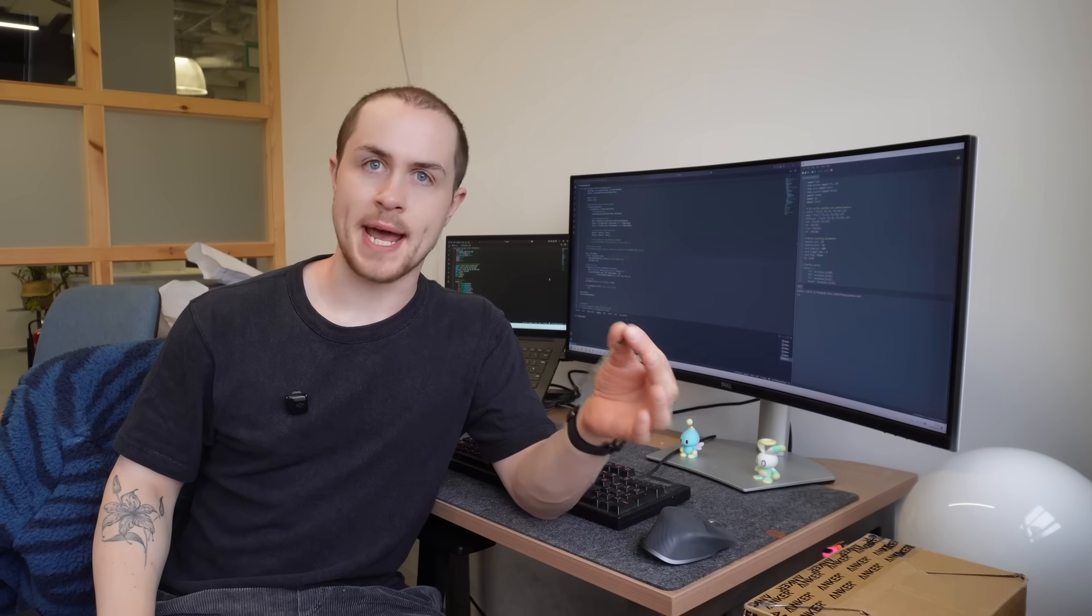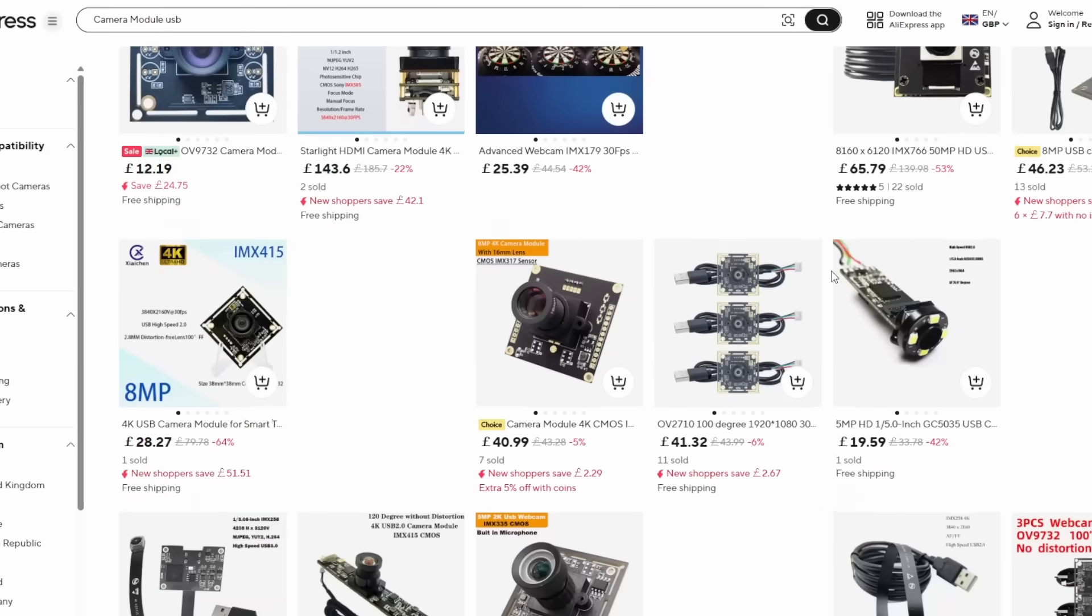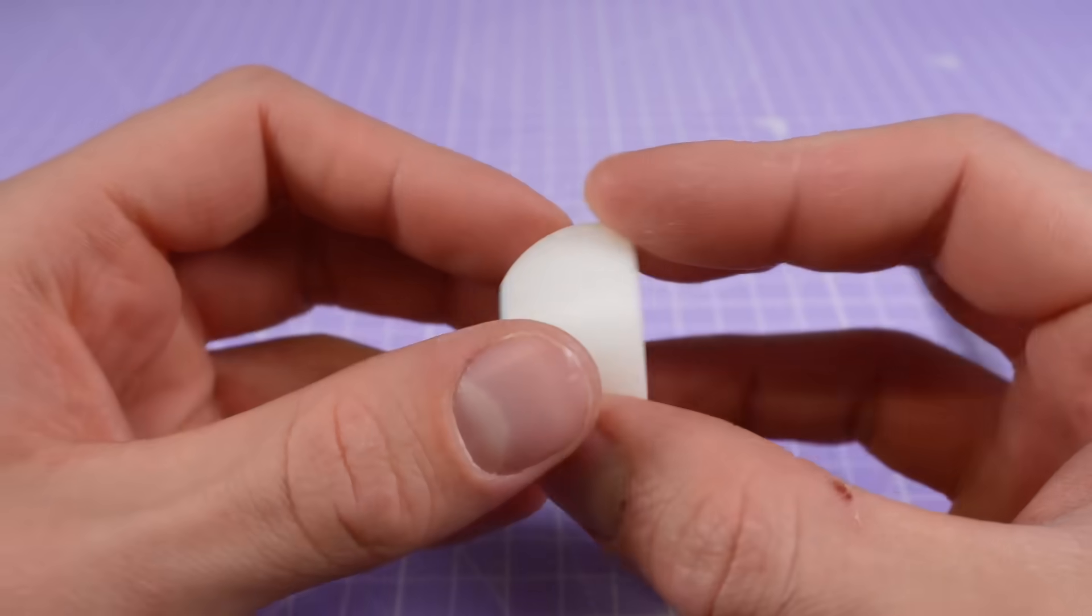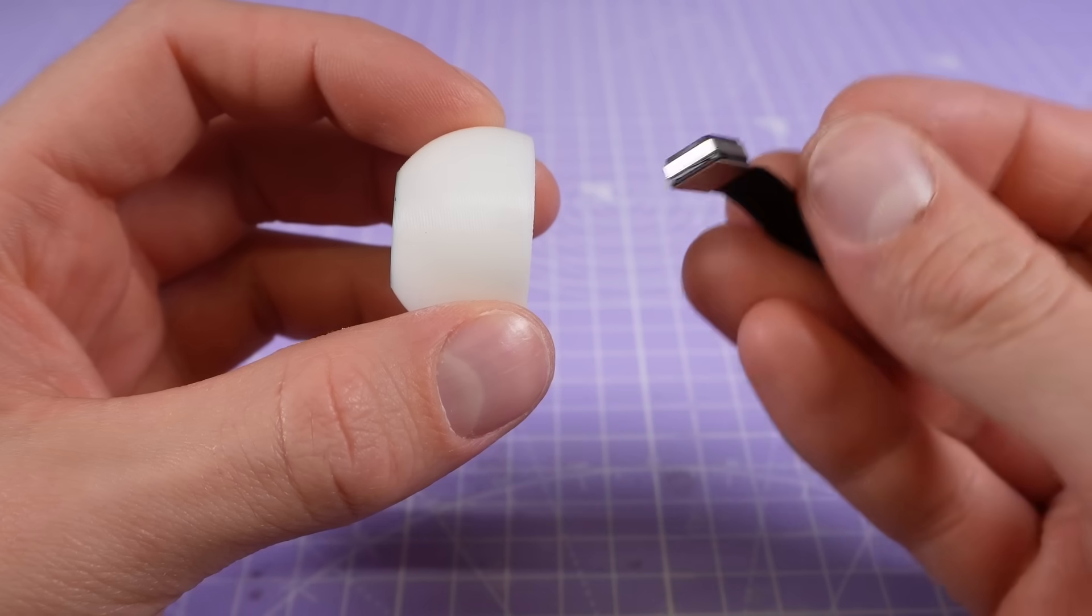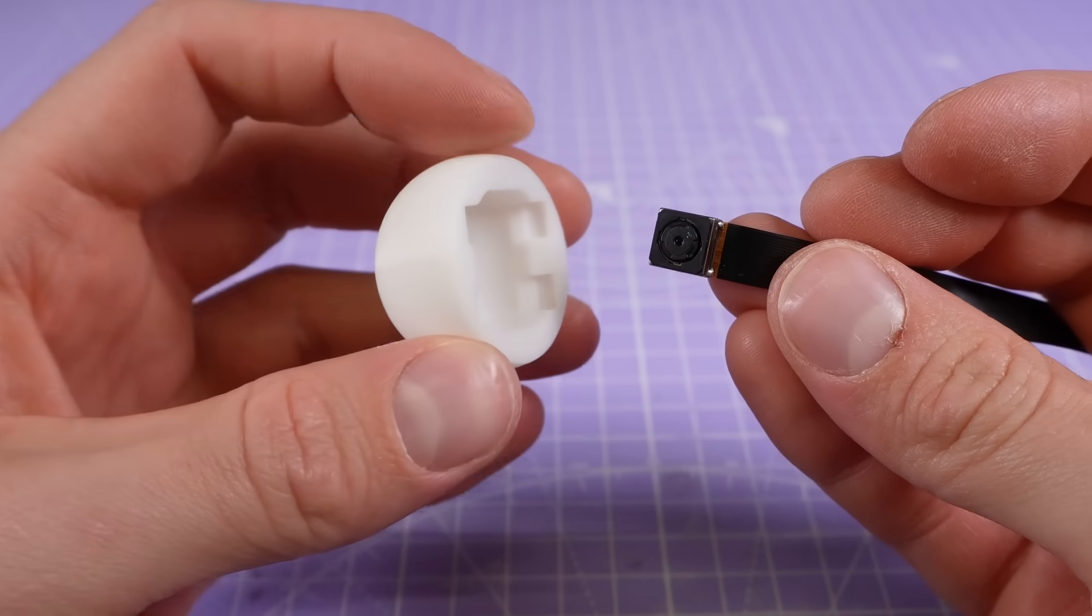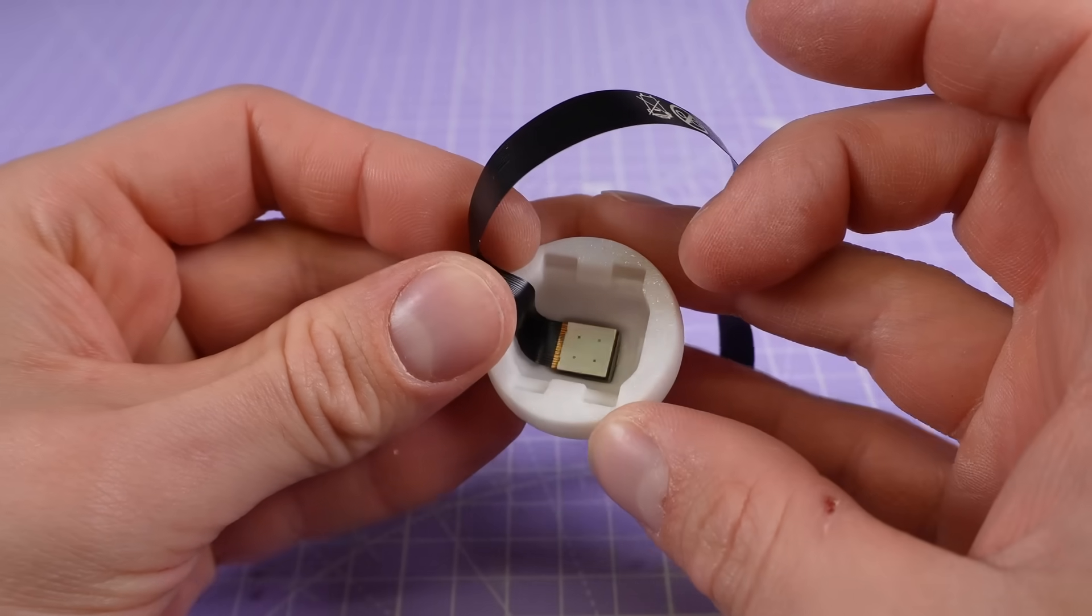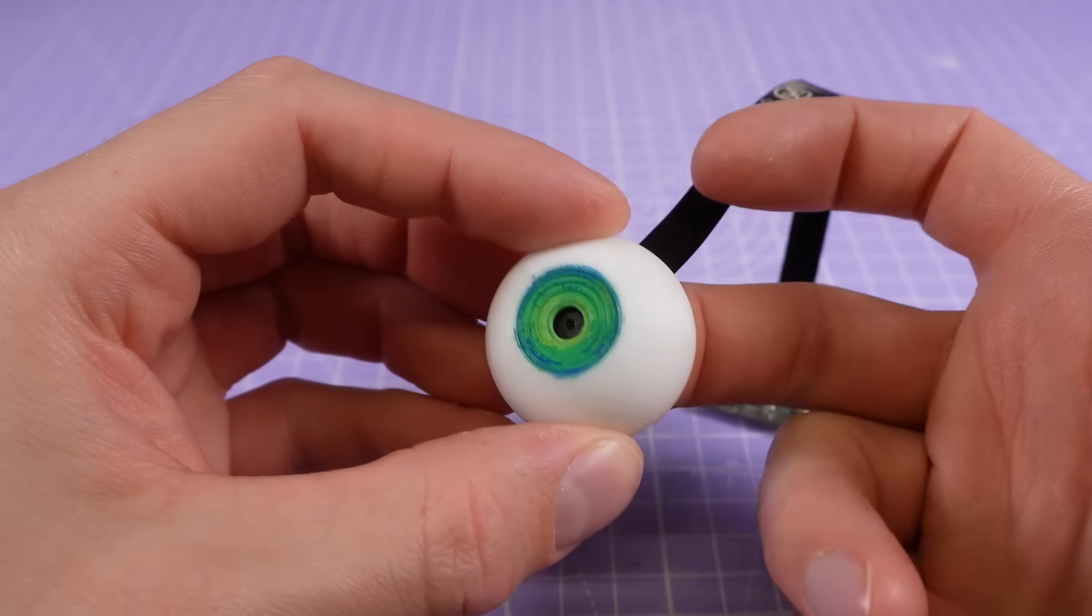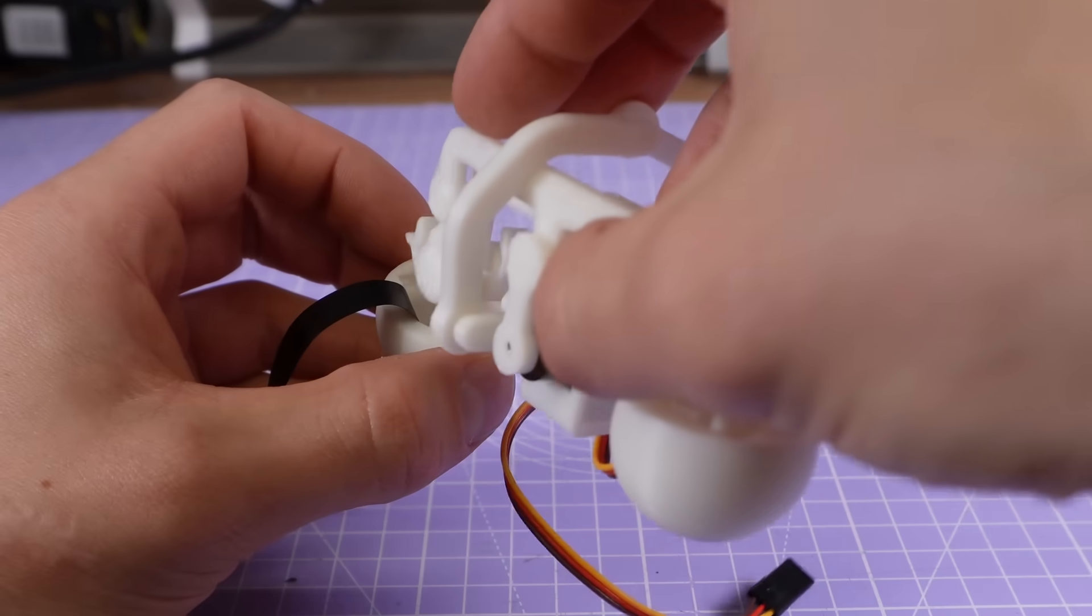I started out by looking at different types of cameras I could get on Amazon and AliExpress, looking for the most compact design possible so that I could fit it into my existing eye mechanism. Luckily, I was able to find one that fit right into the eye. The only modification I needed to make was to the actual eyeball itself, adding a space for the housing of the camera and using the pupil hole to see through. The camera is held in place with snap fit clips at the back of the eye.